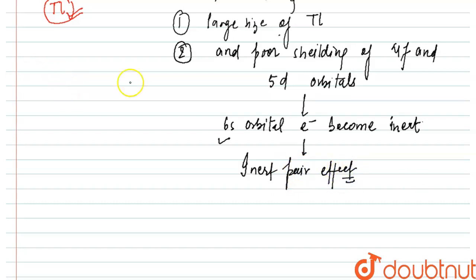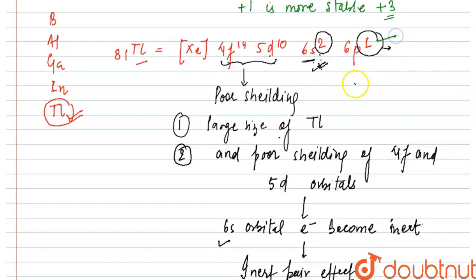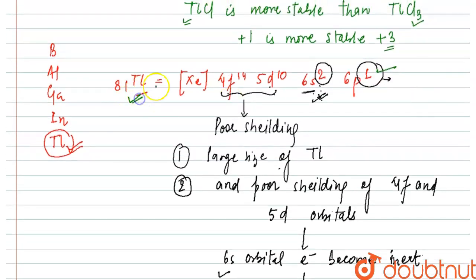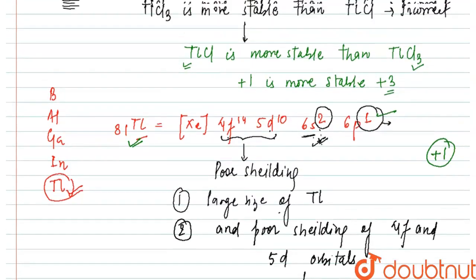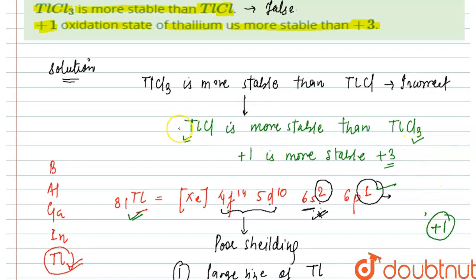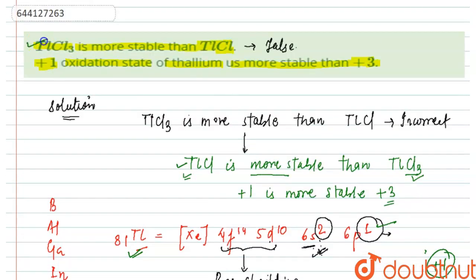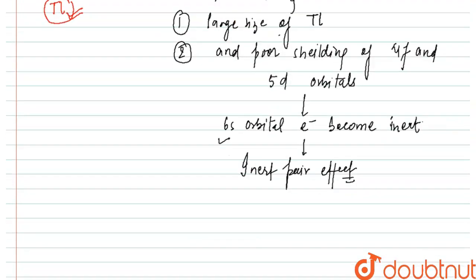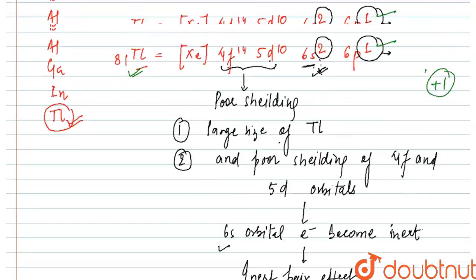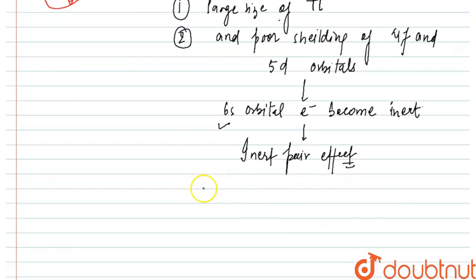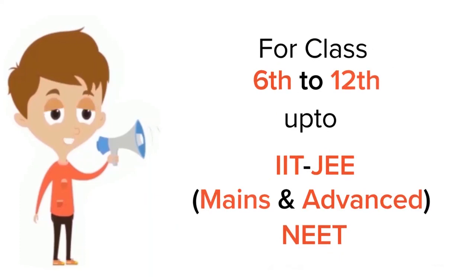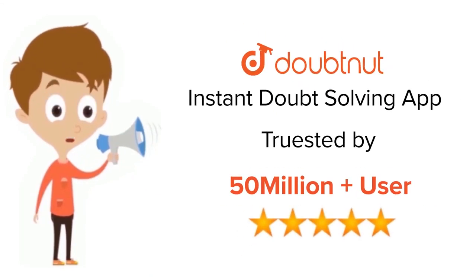Due to the inert pair effect, we only have one bonding electron, which is from the P orbital. Therefore, thallium will only have the plus one oxidation state as more stable. So TlCl will be more stable than TlCl3. We have now verified that the first statement is false, and the second statement — that the plus one oxidation state of thallium is more stable than plus three — is true. Thank you. For class 6 to 12th, IIT-JEE and NEET level, trusted by more than five crore students. Download the Doubtnut app today.